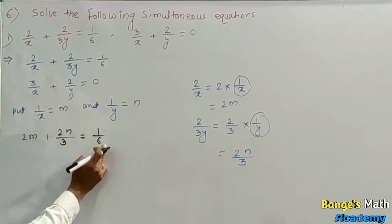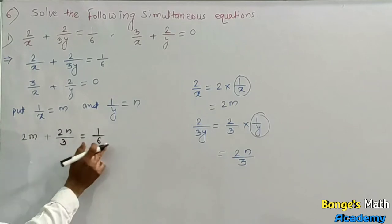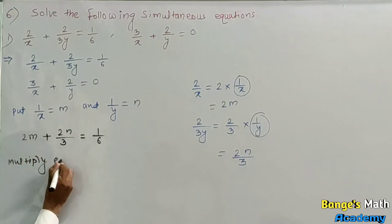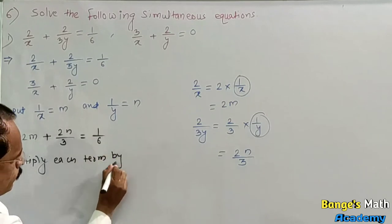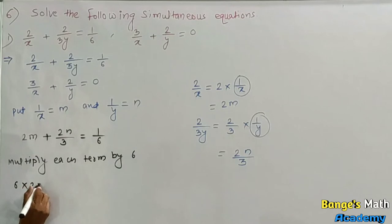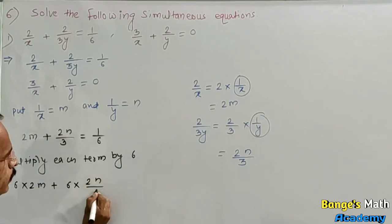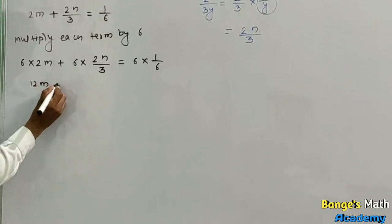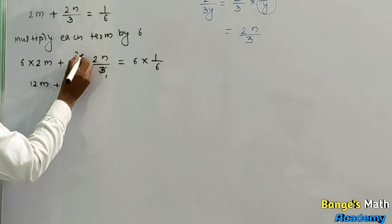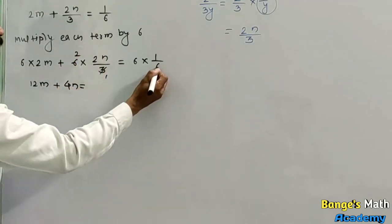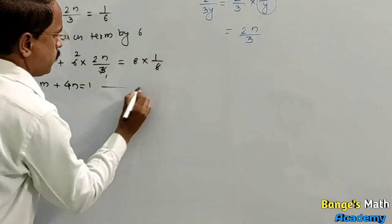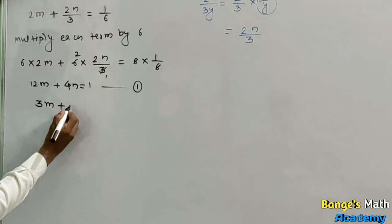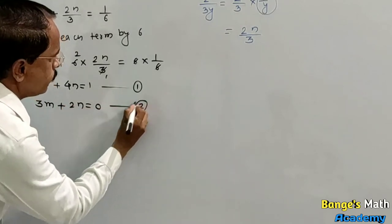The denominator has 3 and 6. To eliminate these, the LCM of 3 and 6 is 6, so multiply each term by 6. We get 12m plus 4n is equal to 1. Give equation number 1. Then consider 3m plus 2n is equal to 0. Give equation number 2.